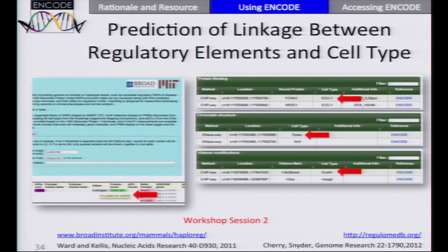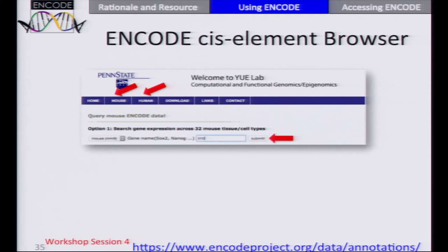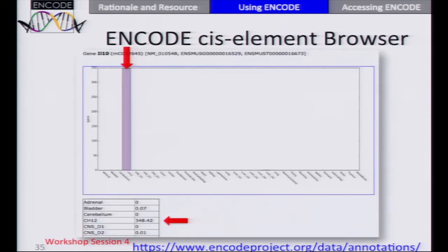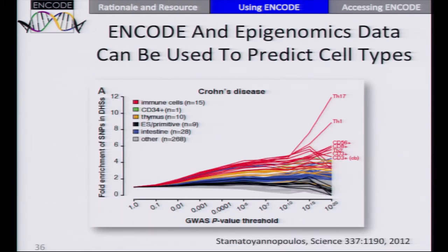Similarly, if you look in RegulomDB or HaploReg — which again you'll be hearing about in workshop session 2 — they report not just evidence that something is an element, but what cell types that comes from. That can help you figure out what cell type might be important. The cis-element browser, which you'll hear about in workshop session 4, also reports information on cell specificity. If one thinks a particular target gene is at work and finds that gene is expressed very strongly in a small number of cell types, that can help generate a hypothesis about the affected cell type.